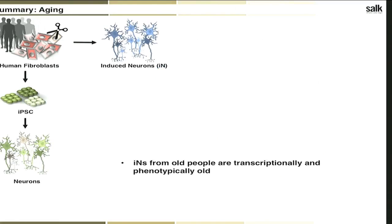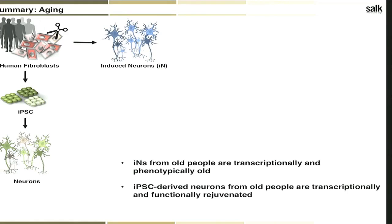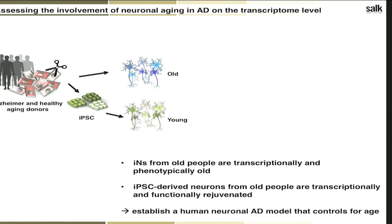We have two key findings: INs are phenotypically old, while iPSC-derived neurons are phenotypically young. So we should study a disease like Alzheimer's in INs. But I think the truly unique opportunity is to generate a human neuronal model system that actually controls for age — generating both old and rejuvenated cells from the very same patients to see what the aging component is doing in Alzheimer's disease.